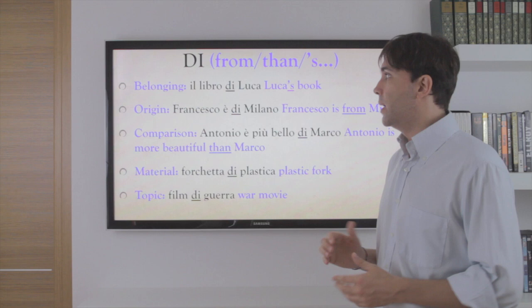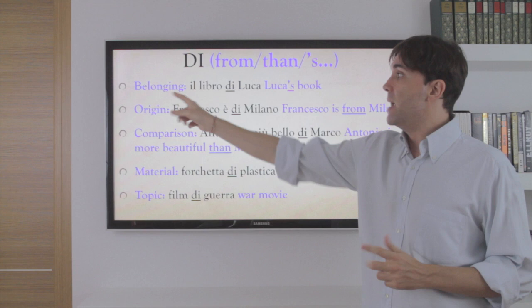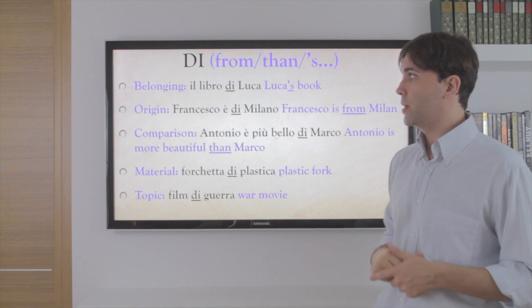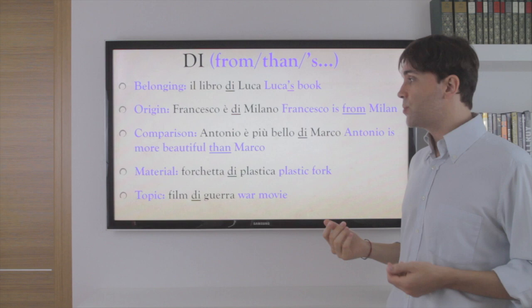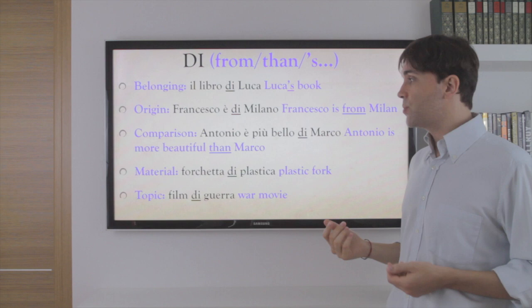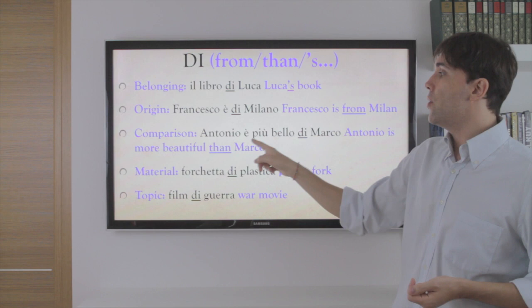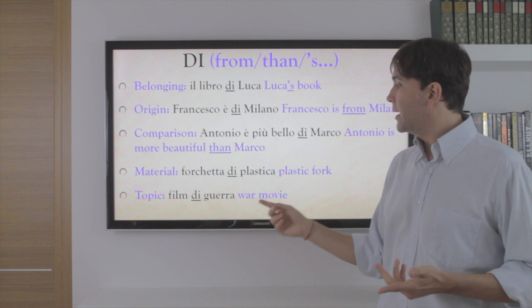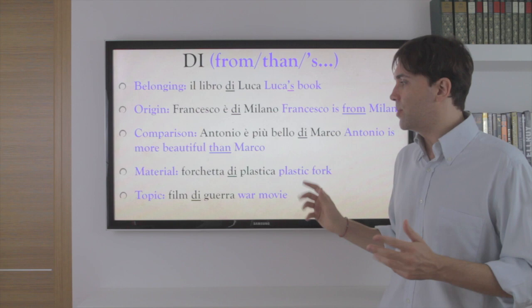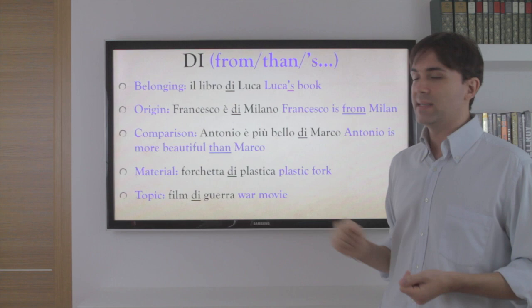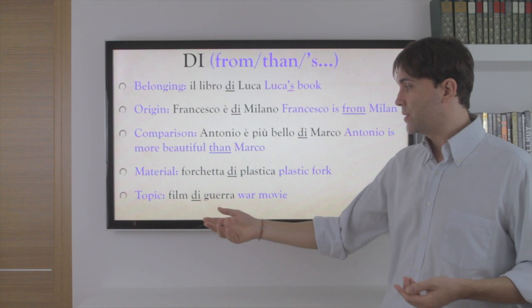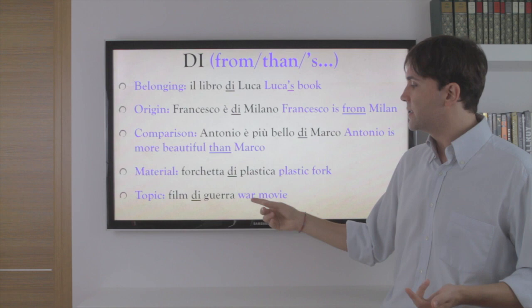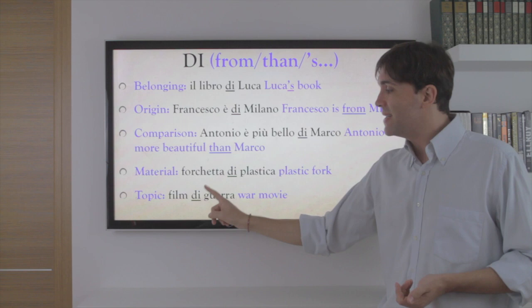Let's take a look at each of them. Di can express belonging — il libro di Luca, Luca's book. It can express origin — Francesco è di Milano, Francesco is from Milan. It can also express comparison — Antonio è più bello di Marco, Antonio is more beautiful than Marco. In English, for material you just say 'plastic fork,' but in Italian we say forchetta di plastica. Same for topics — 'war movie' in English doesn't need a preposition, but in Italian we say film di guerra.